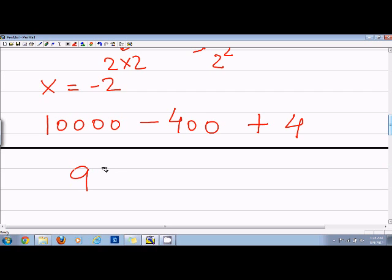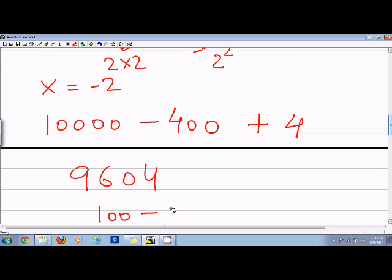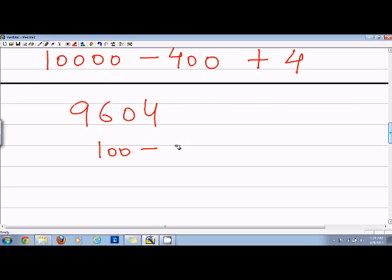So again, in here, I have subtracted 100 minus 2 into 2. So that will be equal to 96 and then 2 square is equal to 4. So that will be 9604.